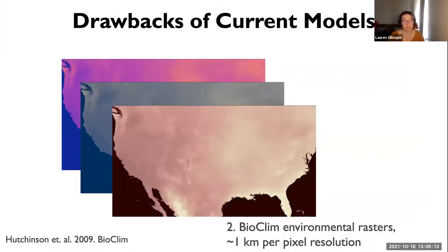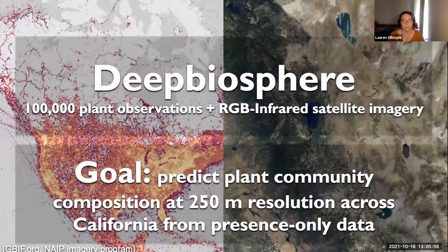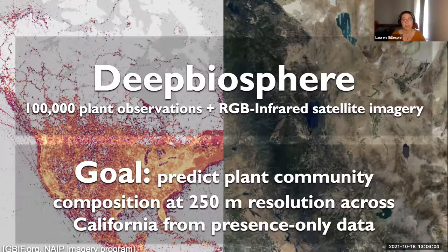The second big drawback is that for the vast majority of SDMs, they are fitted using environmental rasters like Bioclim, which often have a resolution ceiling of around 300 meters per pixel. It's infeasible to build higher resolution environmental variables since distinguishing mean average precipitation at a meter-level resolution is essentially impossible. However, there have been big breakthroughs recently in using remote sensing products to predict various biogeographical artifacts — such as work predicting the location of invasive plant communities in Chile from unmanned aerial drone footage using a U-Net convolutional neural network architecture for image segmentation. This is where our approach, DeepBiosphere, comes in.